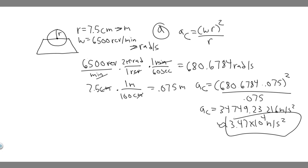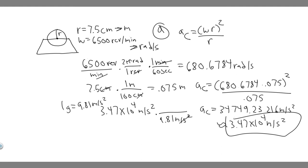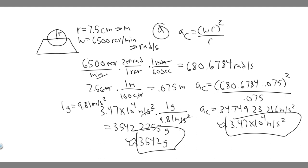Now they want us to convert it into g's. We have 3.47 times 10 to the 4 meters per second squared, and we know 1g equals 9.81 meters per second squared. So we divide by 9.81 — using the more exact value — and we get approximately 3,542.2 g's. So the answer to part A is about 3,542 g's.